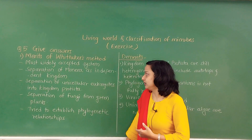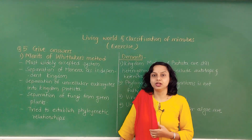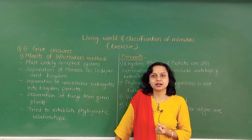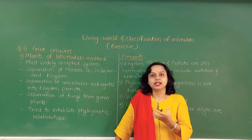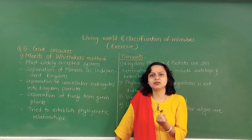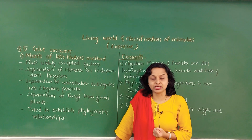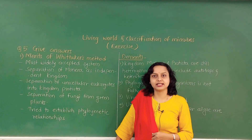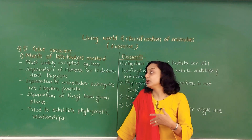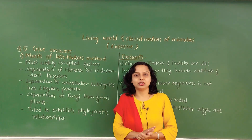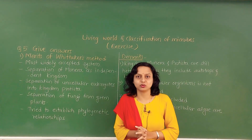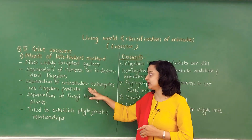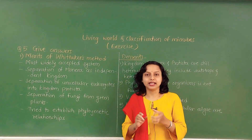Next merit: separation of Monera as an independent kingdom. In Kingdom Monera, students, the organisms there — their cell structures are prokaryotic and they are unicellular organisms. No specific cell organelles are found in them. Whereas leaving that one kingdom aside, all other kingdoms contain eukaryotes. That is why Kingdom Monera has been made a separate kingdom. This is one specific feature you can mention.